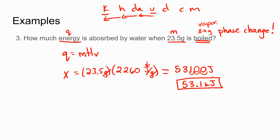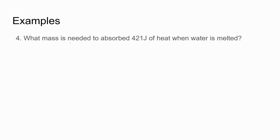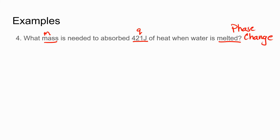You don't have to convert to kilojoules if you don't want to, especially if the question doesn't specify that. Our last question: what is the mass needed to absorb 421 joules of heat when water is melted? Melted is a phase change, so temperature doesn't change and we're not going to use the formula with delta T. Melted is the same as fusion, so we use Q = MHf.